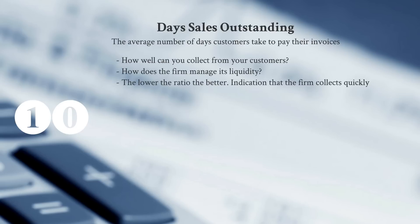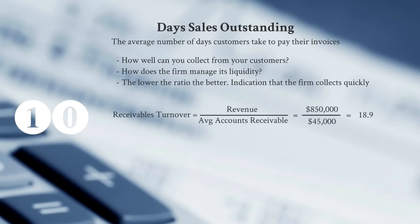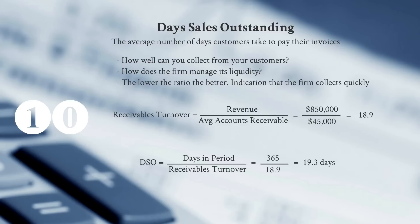A lower ratio means we're collecting our money quickly and not having to use as much operating cash or tie up funds in accounts receivable. This is calculated first by getting our receivables turnover: revenue divided by average accounts receivable. If revenue was $850,000 and average receivables were $45,000, we get 18.9 times. Dividing 365 days by 18.9 gives us 19.3 days on average to collect.